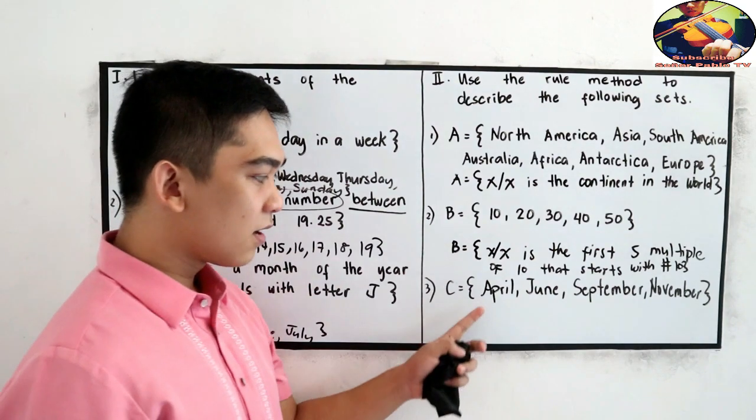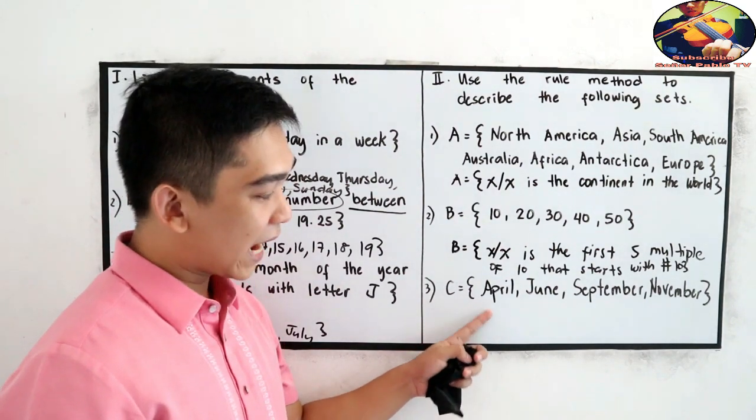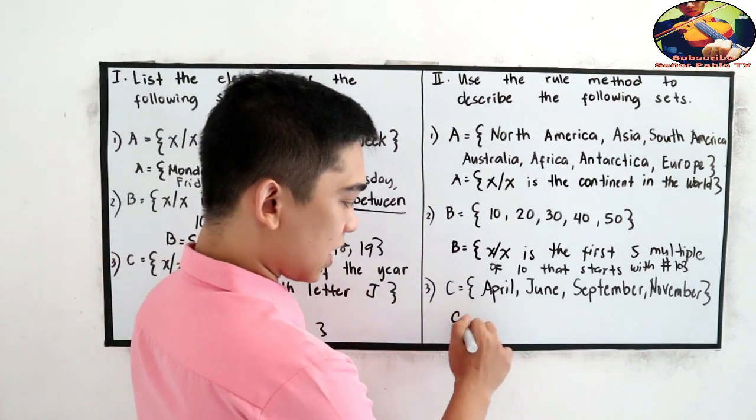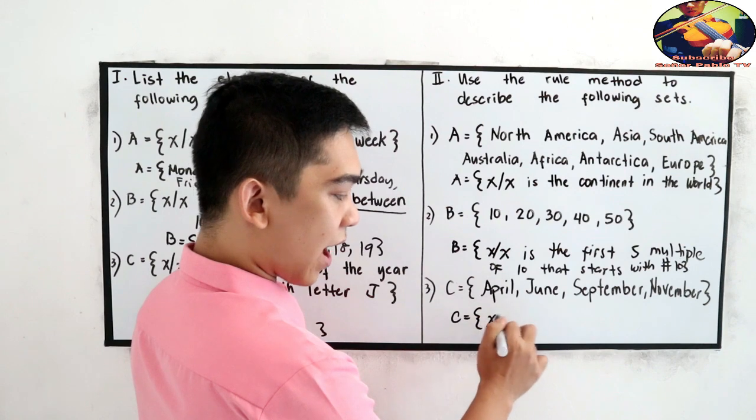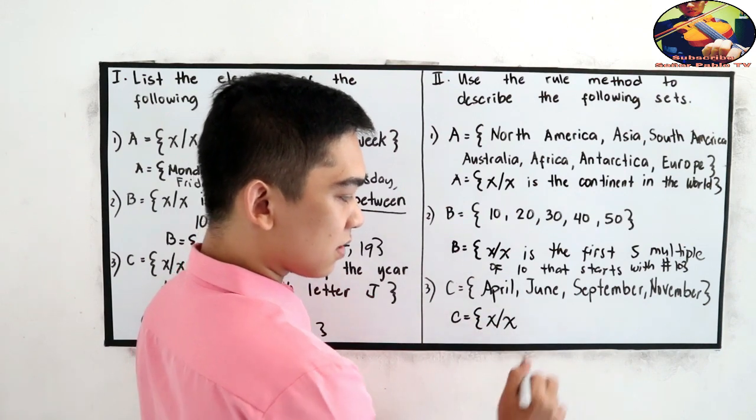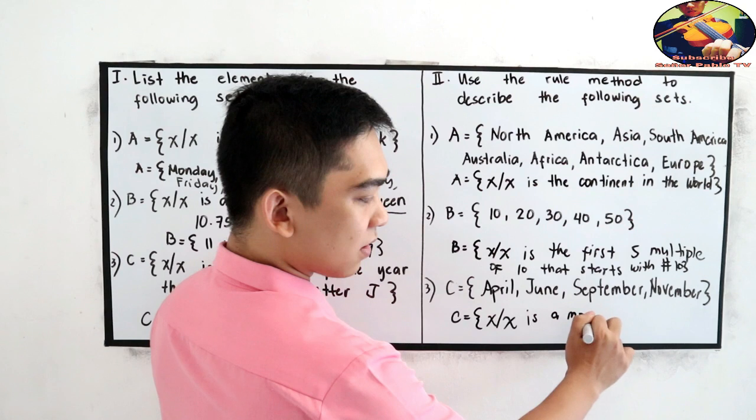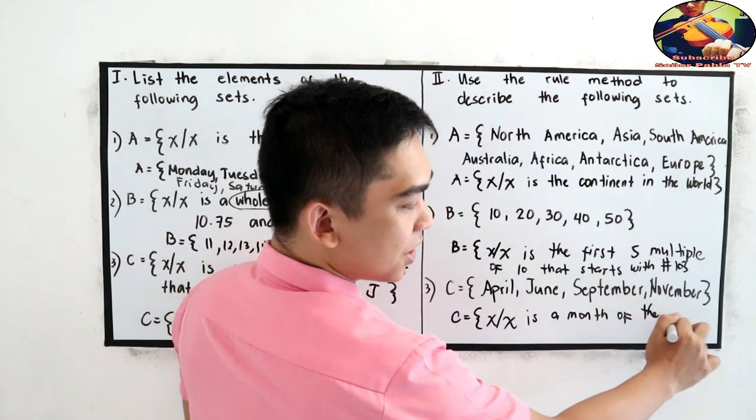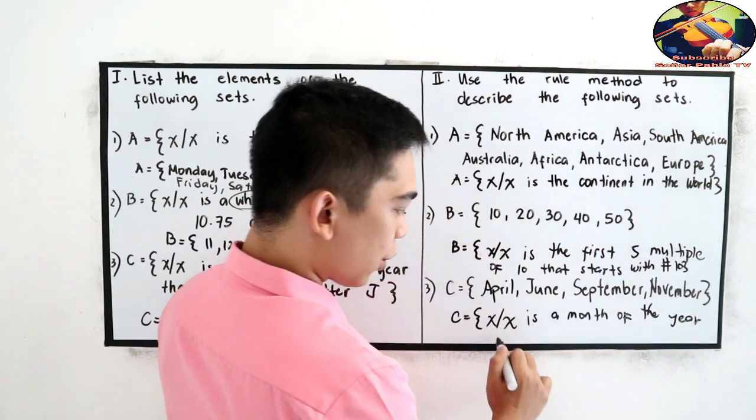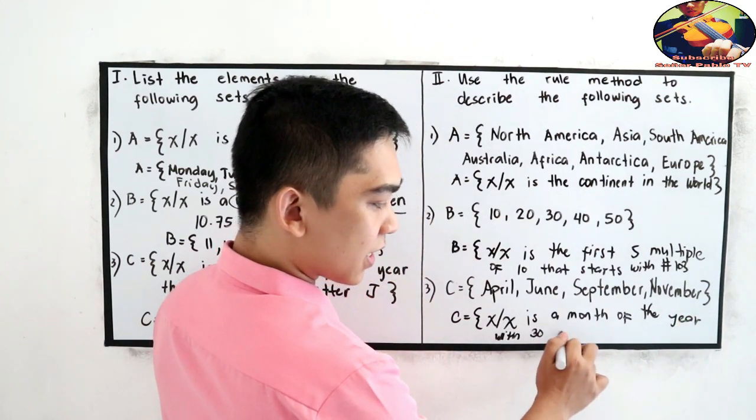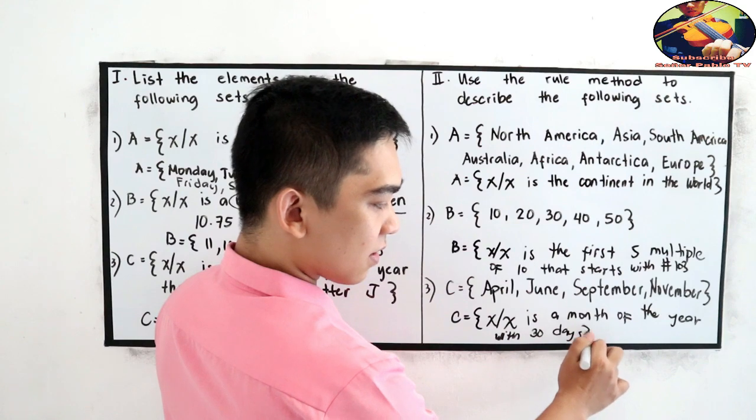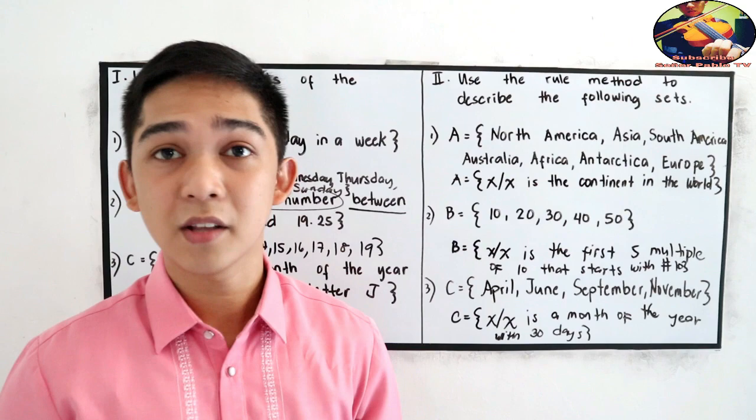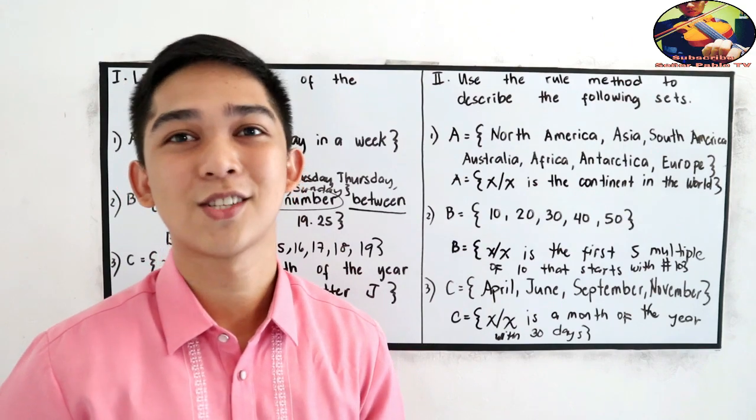Next set C April, June, September, and November so C is x such that x is a month of the year with 30 days. We know that April, June, September, and November those are the months with exactly 30 days.